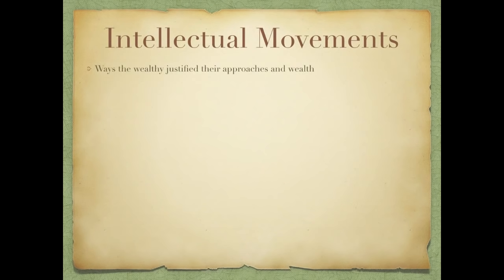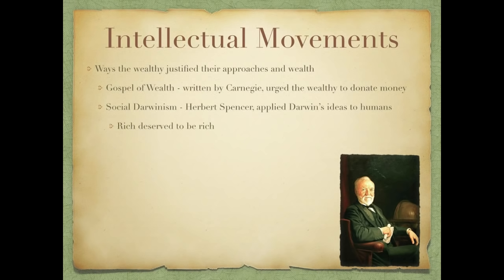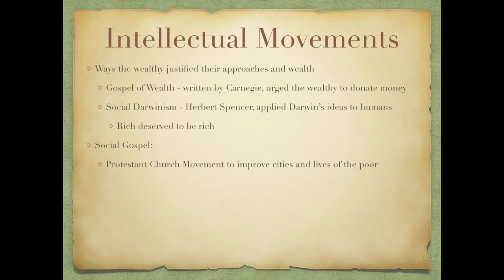Finally, let's cover intellectual movements. The Gospel of Wealth, written by Andrew Carnegie, urged that the wealthy should donate their money to better society — he gave lots of money to libraries. Social Darwinism, championed by Herbert Spencer, applied Darwin's theory of evolution to humans and argued for survival of the fittest, saying the rich deserve to be rich. The Social Gospel was a Protestant church movement that sought to improve cities and the lives of the poor, influencing the Progressive Era.